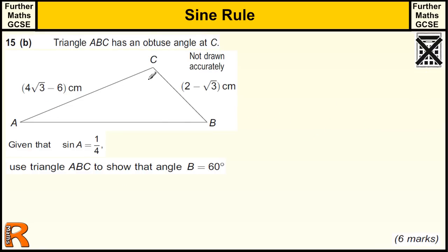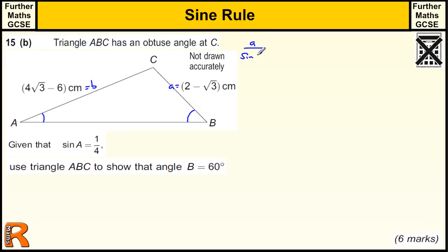With this part of the question, we haven't got a right-angled triangle anymore, because this is an obtuse angle at C, so that's telling us this angle is not right-angled. But what we do have is we know that sine A — we need to think about this angle A — because sine A is a quarter, and we are trying to find angle B, or show B is 60. So we've got two sides and two angles; the sides are opposite the angles.